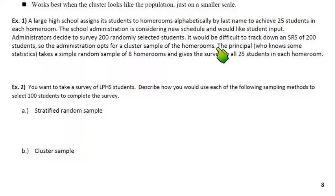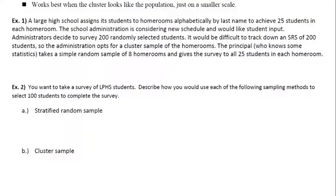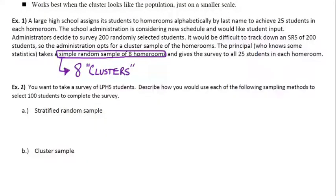We'll assume it's difficult to obtain 200 students completely at random, so they'll do a cluster sample. The principal takes a simple random sample of 8 homerooms and gives the survey to all 25 students in each homeroom. By randomly selecting 8 homerooms as clusters, and with 25 kids in each room, that gives us our random sample of 200 kids. Each kid inside each of those clusters is included in the sample.